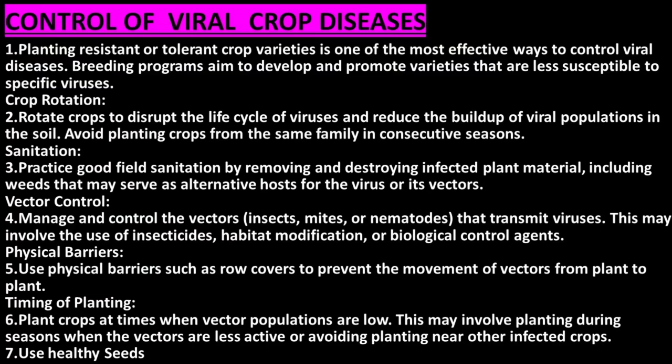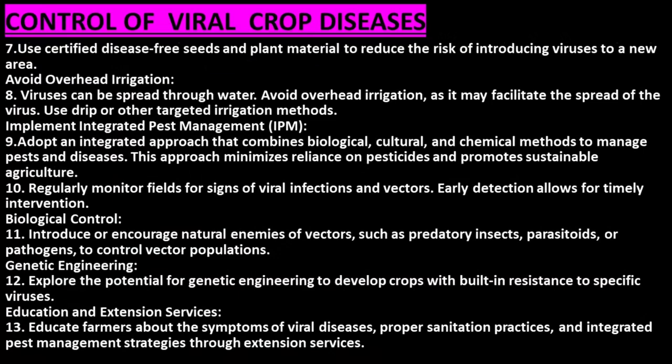Physical barriers, such as row covers, can prevent the movement of vectors from plant to plant. Timing of planting: plant crops at times when vector populations are low, during seasons when vectors are less active, or avoid planting near other infected crops. Seed health: use certified disease-free seeds and plant material to reduce the risk of introducing viruses to a new area.